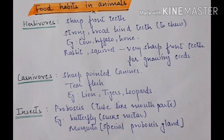Carnivores have sharp pointed canines — teeth adjacent to the two front teeth — which are very sharp and pointed in carnivores so they can grab the prey and tear the flesh. Examples are lion, tiger and leopard. Insects have a very special organ called the proboscis — a tube-like mouth part. A butterfly inserts this tube-like part into the superficial layers of a flower to suck nectar. In the case of a mosquito, it inserts the tube into human flesh to suck blood, so mosquitoes have quite a sharp proboscis.